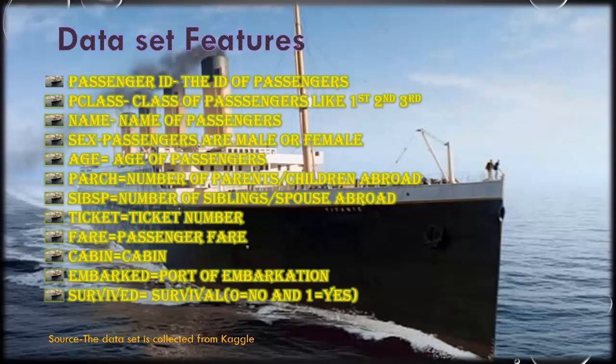Passenger ID, the ID of passengers, the P class which describes the class of passengers like 1st, 2nd, or 3rd, the name, sex, age, parch, i.e. number of parents or children aboard, sibsp, i.e. number of sibling spouse aboard, ticket, fare, cabin, embarked, i.e. port of embarkation, and survived.